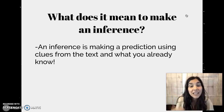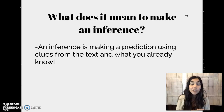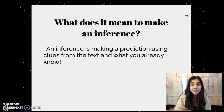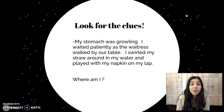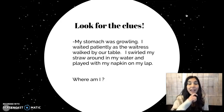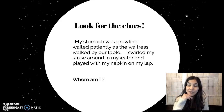Now you just made an inference. I didn't tell you I had a coffee cup. You thought about things you already knew in your head and the clues that I was giving you in order to make a prediction and make that inference. So we're going to look for clues. I'm going to give you guys some text, we're going to read it together, and then try to use the knowledge we already have in our head with the clues to make an inference. So let's get started.